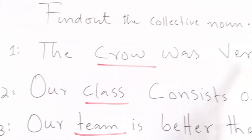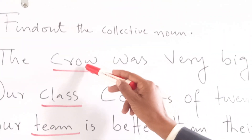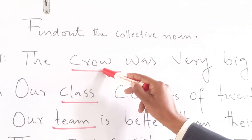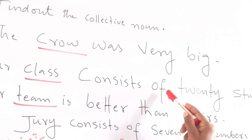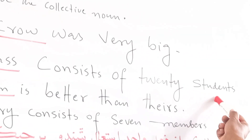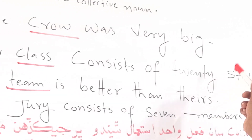For example: 'The crowd was very big.' And: 'Our class consists of 20 students.' Here 'crowd' and 'class' are collective nouns used as singular.